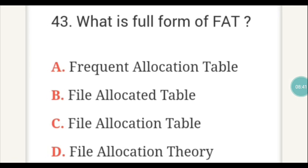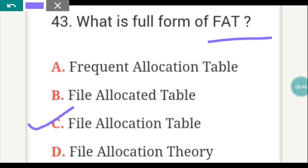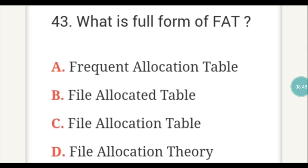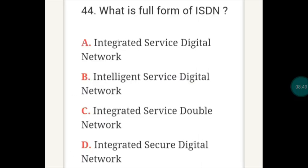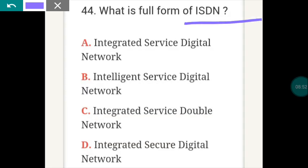What is the full form of FAT? FAT full form is C — File Allocation Table. What is the full form of ISDN? ISDN full form is A — Integrated Service Digital Network.